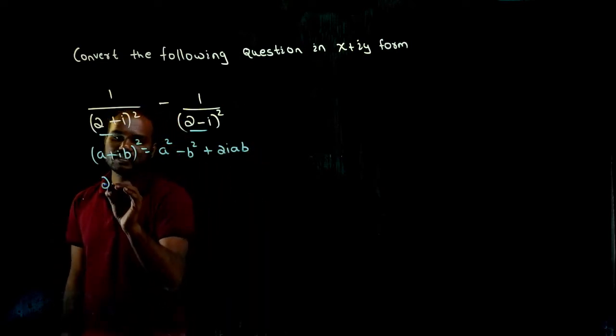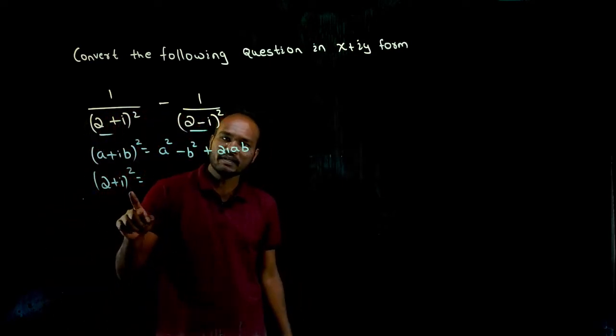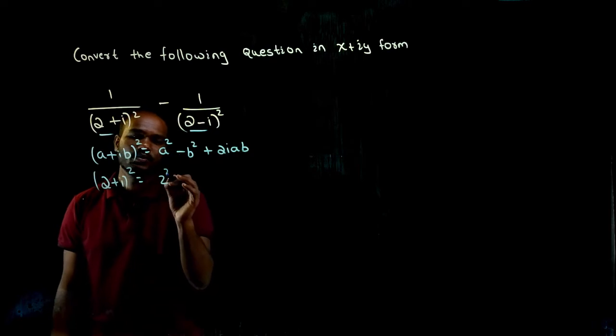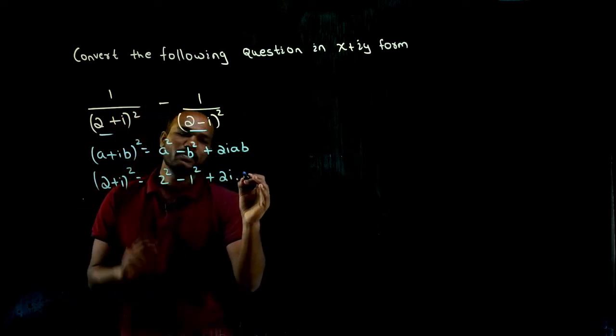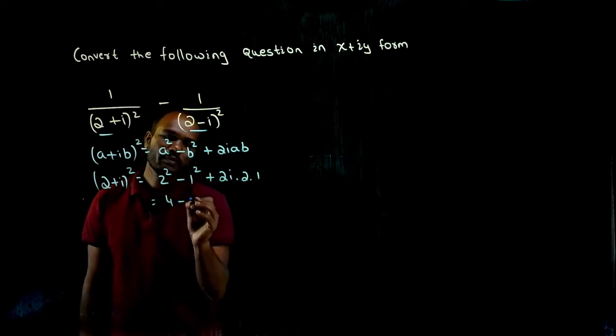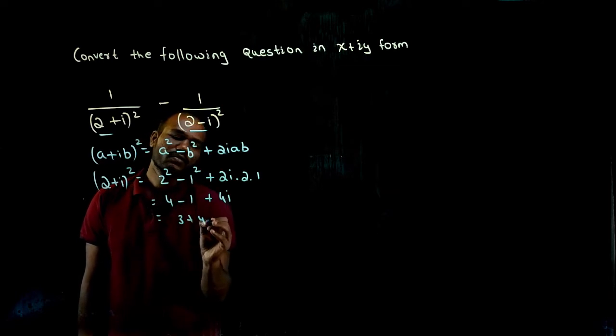In the same case, if I consider 2 plus i whole square, so now this will become what? a value is 2, b value is 1. So 2 square minus 1 square plus 2 times i times a value 2, b value 1. So 2 square is 4 minus 1 plus 4i. So this will become 3 plus 4i.